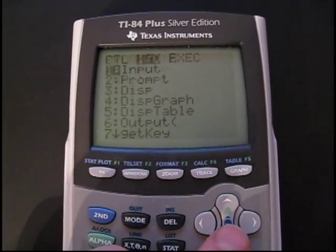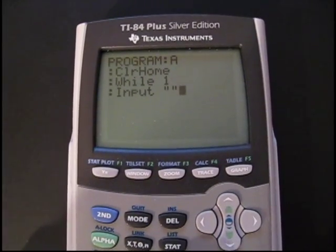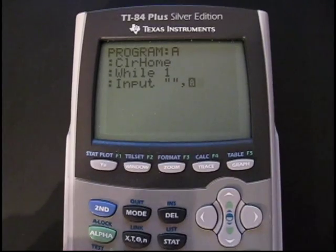Then go to input to take input from the user. Do two parentheses so nothing is displayed on the screen, comma, A, so A is your variable.